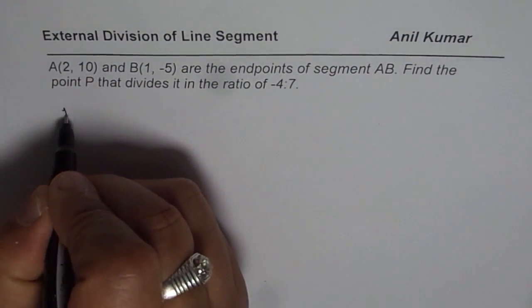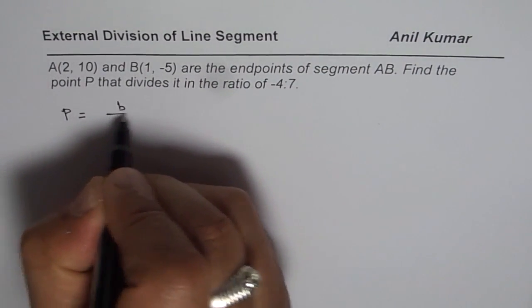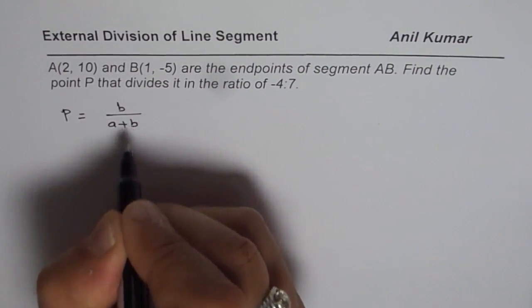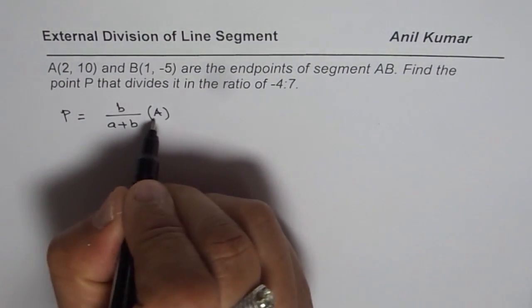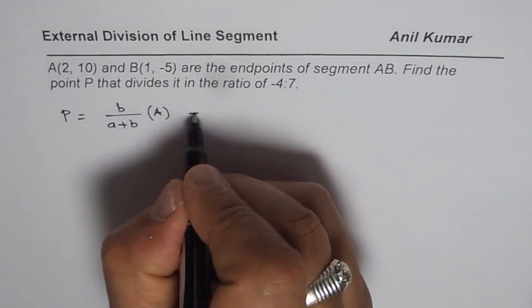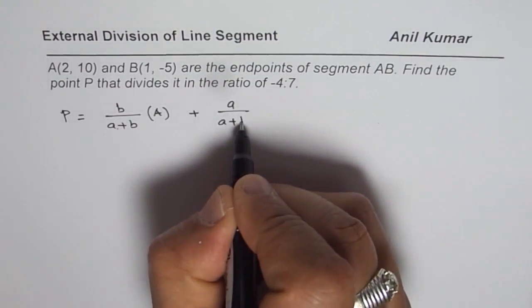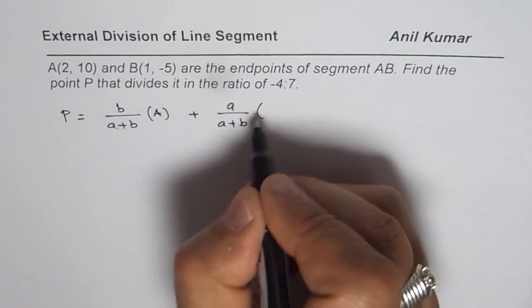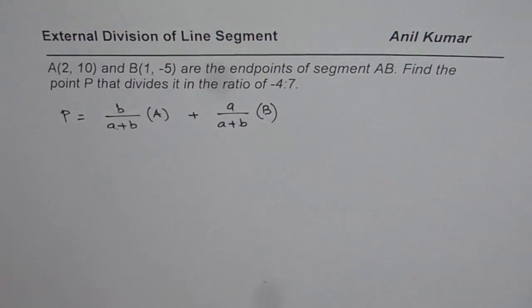So coordinate points of P can be found by using the formula: B over A plus B times the coordinate points of A, plus A over A plus B times the coordinate points of the other point B. That is how you can find coordinate points of P.